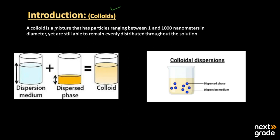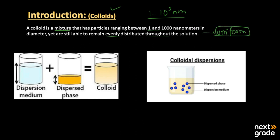When we talk about a colloid, it is a mixture that has particles ranging from 1 to 10³ nanometers as their particle size. They are still able to remain evenly distributed throughout, meaning their solution is uniform throughout.